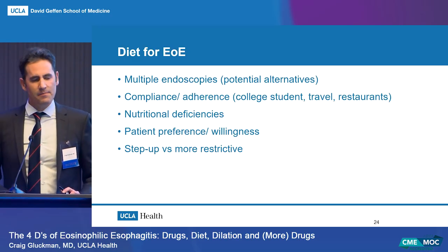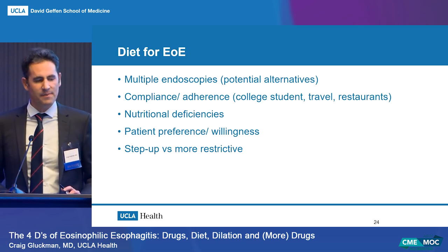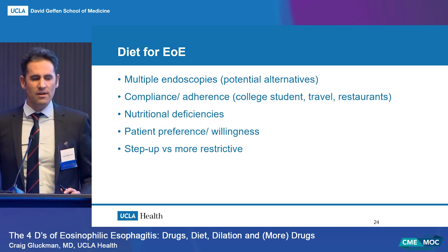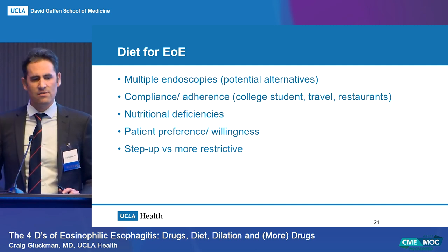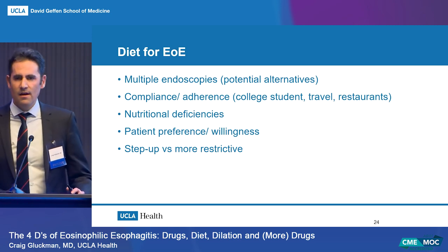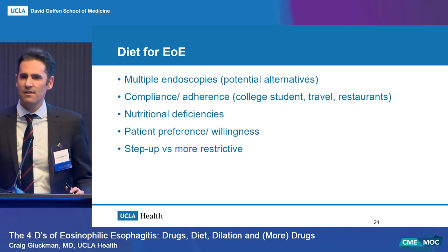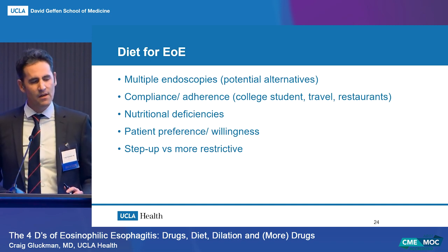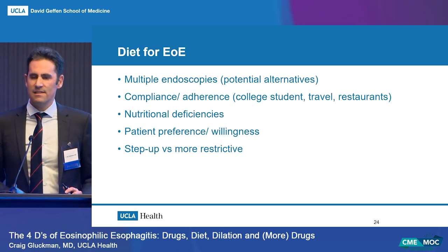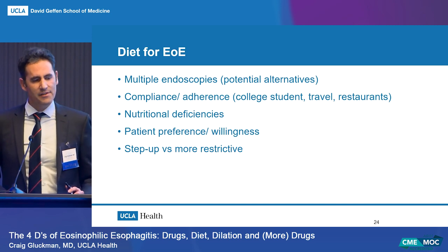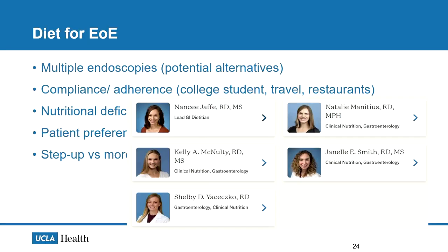Some tips for dietary therapy: counsel your patient that multiple endoscopies may be needed, and we are working on alternatives such as transnasal endoscopy in an office setting or esophageal sponges at bedside. There must be patient buy-in for compliance and adherence - a college student is unlikely to manage a six-food elimination diet, and frequent travelers or restaurant-goers will find it complicated. Be careful of significant nutritional deficiencies when avoiding large food groups. A dietitian consult upfront is very helpful to navigate these issues.